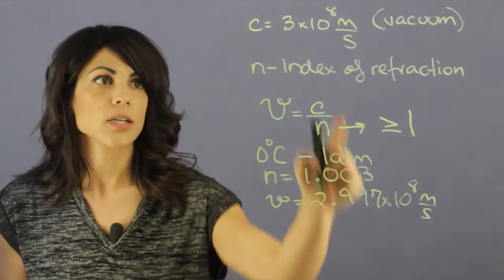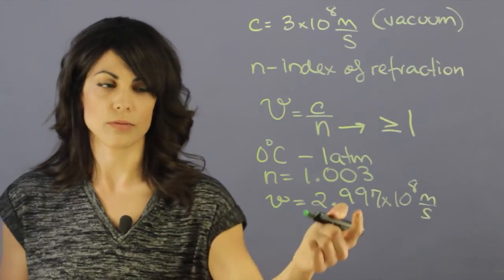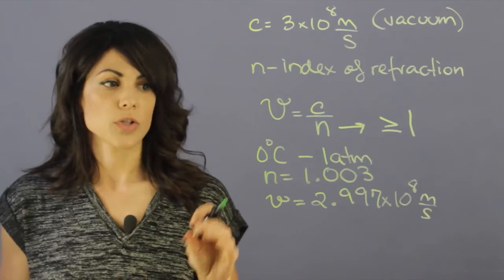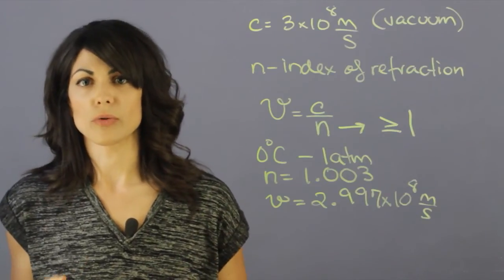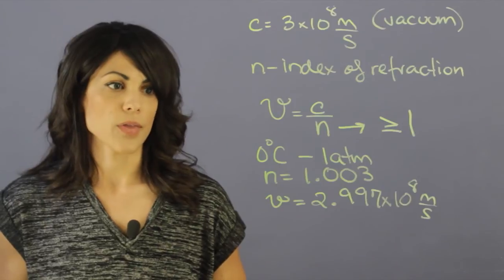As you can see, it changes very little from 3. We're practically fairly close to 3. Because it changes very little, we generally don't consider air a good refractor, and that's one of the things you should know.